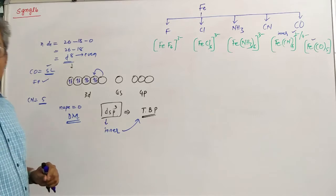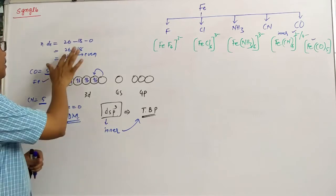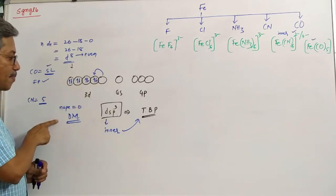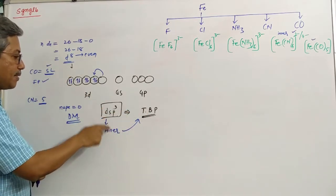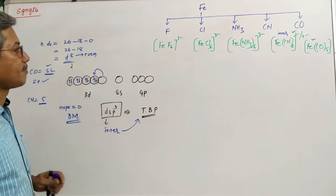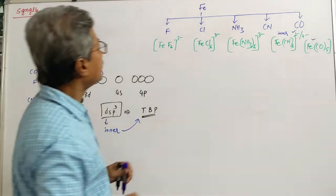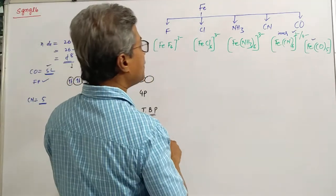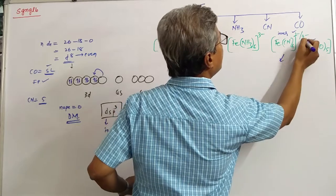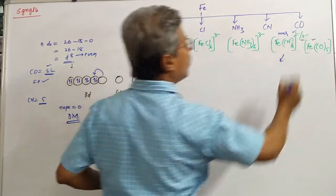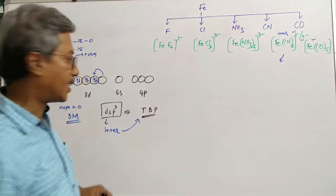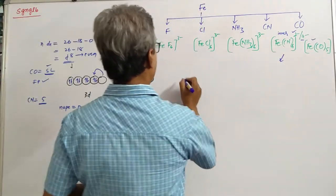Therefore, just by looking at the D electrons, we are able to predict the magnetic property, shape, and hybridization. Let us now take up this example with 4 as the oxidation number.